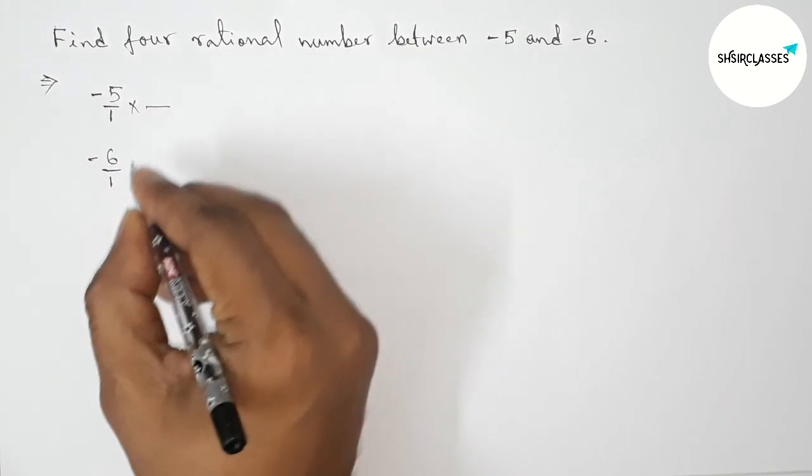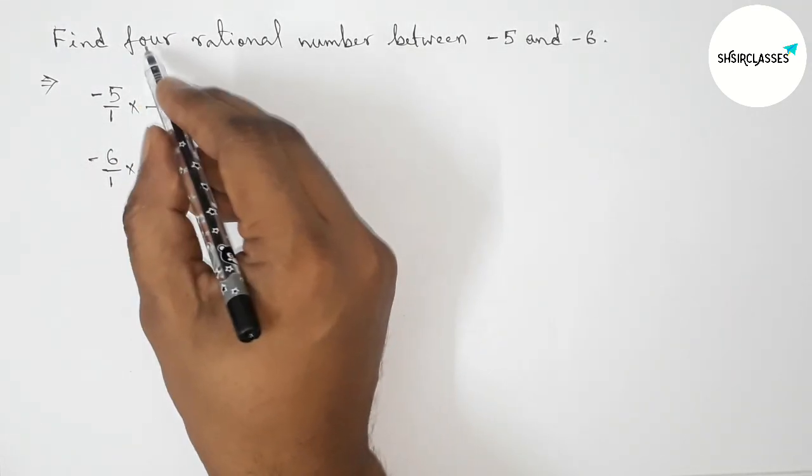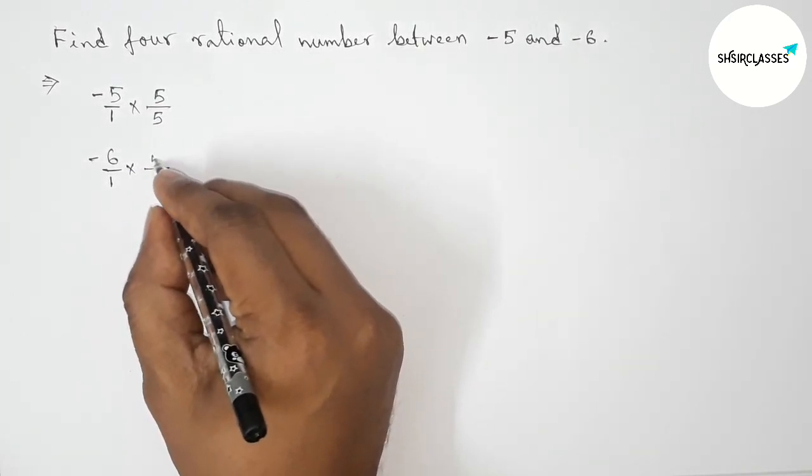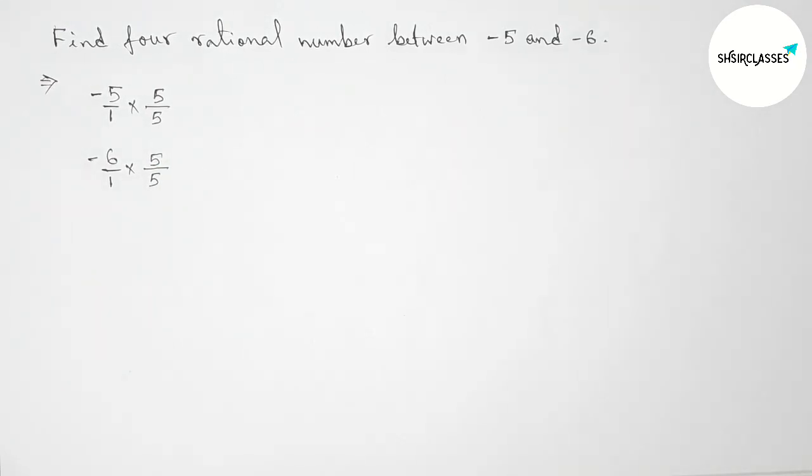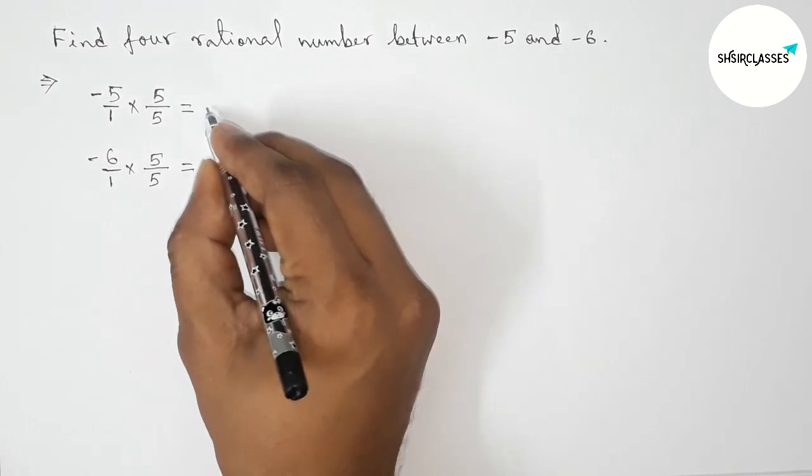Again, we have to multiply both numbers by a number. So here we have to find four rational numbers, so we should multiply both numbers by 5 up and down by this way. Okay, so now we have to simplify all this.